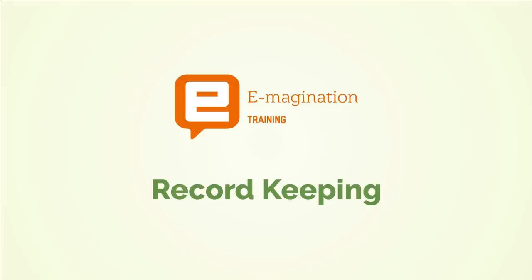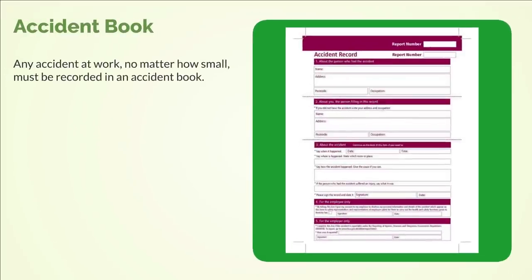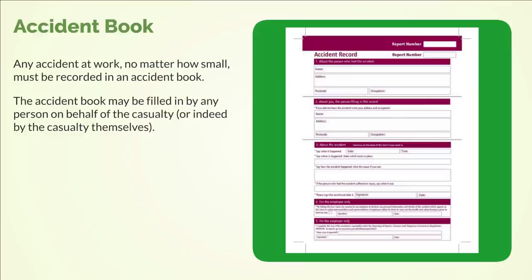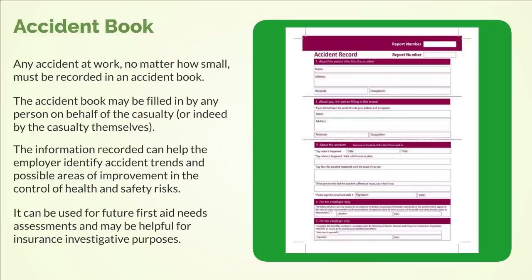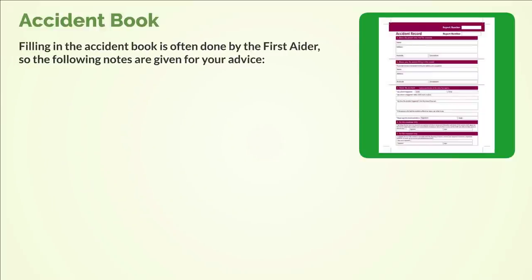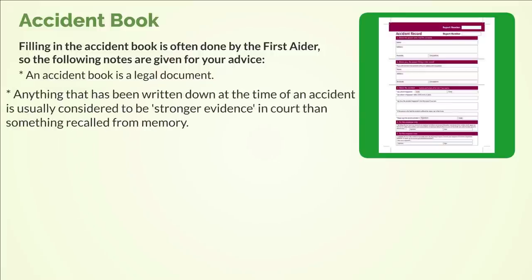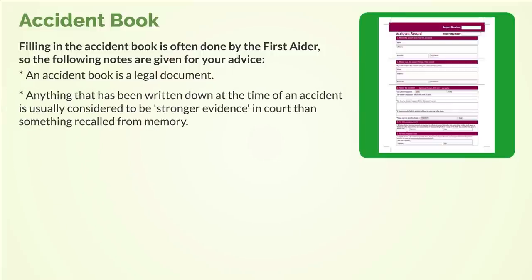We shall now look at record keeping. Accident book: any accident at work, no matter how small, must be recorded in an accident book. The accident book may be filled in by any person on behalf of the casualty, or indeed by the casualty themselves. The information recorded can help the employer identify accident trends and possible areas of improvement in the control of health and safety risks. It can be used for future first aid needs assessments and may be helpful for insurance investigative purposes. Filling in the accident book is often done by the first aider. An accident book is a legal document — anything written down at the time of an accident is usually considered to be stronger evidence in court than something recalled from memory.